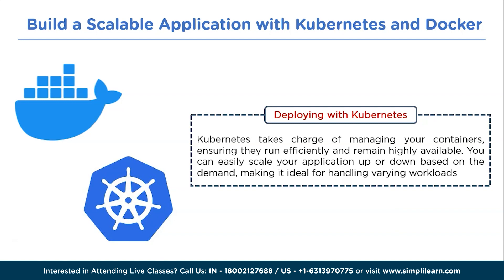One of the most significant advantages of Kubernetes is its ability to manage application updates seamlessly. With Kubernetes, you can roll out updates without any downtime, ensuring a smooth transition for your users. Kubernetes also enhances high availability and fault tolerance by replicating your application's containers across multiple nodes, ensuring the application stays accessible even if some nodes fail. Another powerful feature is the Horizontal Pod Autoscaler (HPA), which automatically adjusts the number of replicas based on CPU usage or other custom metrics, keeping your application responsive under varying workloads.